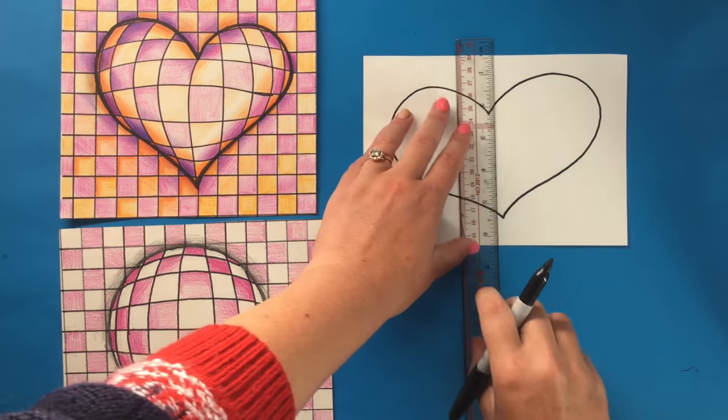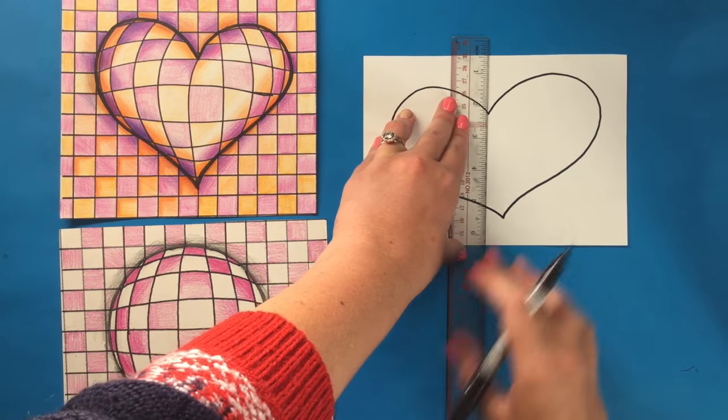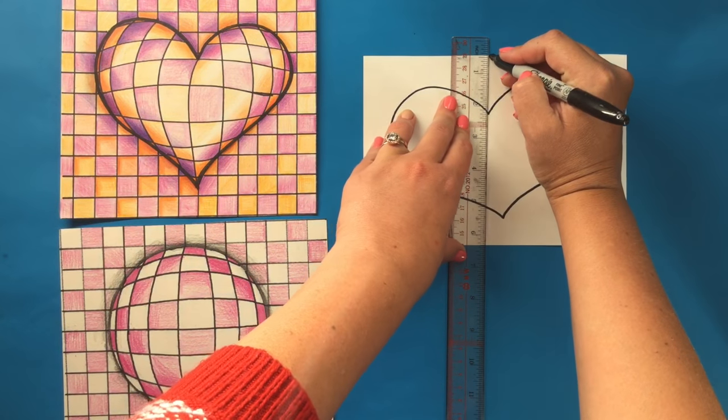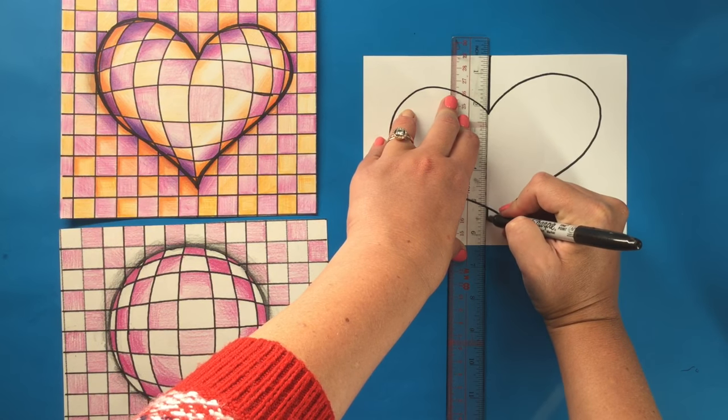What I want you to do is take your ruler and you are going to draw a vertical line on your paper. But when you get to your shape, you are going to skip over your shape.